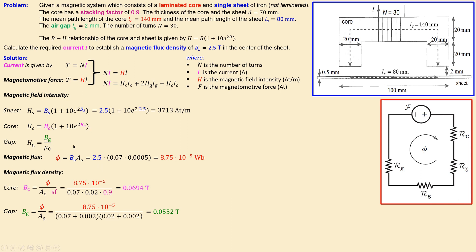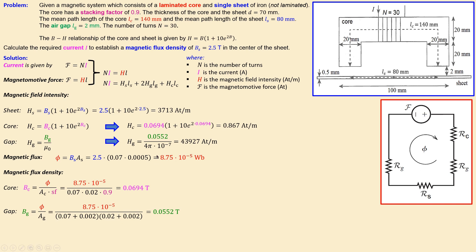Now substituting these flux densities into the formulas, we get: H_core = 0.867 ampere-turns per meter by using the B-H formula for the core. For the gap, H_gap = B_gap / μ₀, where μ₀ is the permeability of vacuum — a constant found in tables. This gives a large H value for the gap, which clearly dominates the contribution to the overall equation.